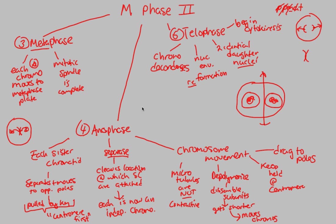In this video, we covered Metaphase, Anaphase, and Telophase. Metaphase was all about aligning at the Metaphase plate. Anaphase was all about separating — we used the separase enzyme and chromosome movement to create two independent areas of genetic material. Then in Telophase, we enclosed those two areas with a new nuclear envelope, decondensed the genetic material back to chromatin format, and formed two identical daughter nuclei. We'll develop those daughter cells in cytokinesis, which we'll talk about in the next video.